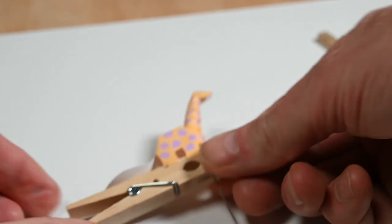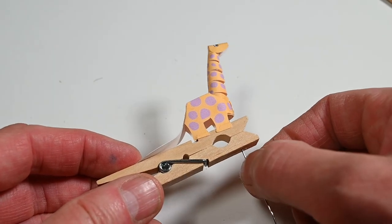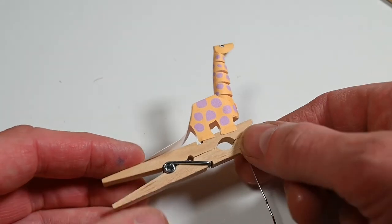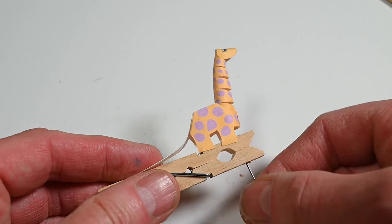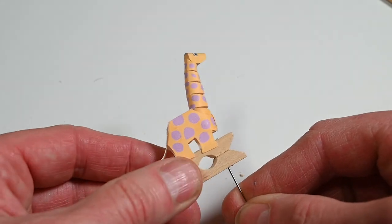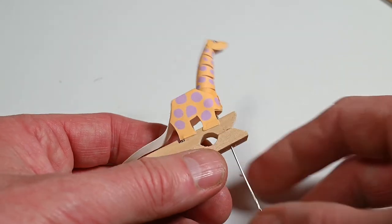And then that's ready to glue up. This is the wire that pulls the head up and down. And we need to fasten that to the bottom jaw of the peg so that when you open the peg like that, it moves the head and neck up and down.